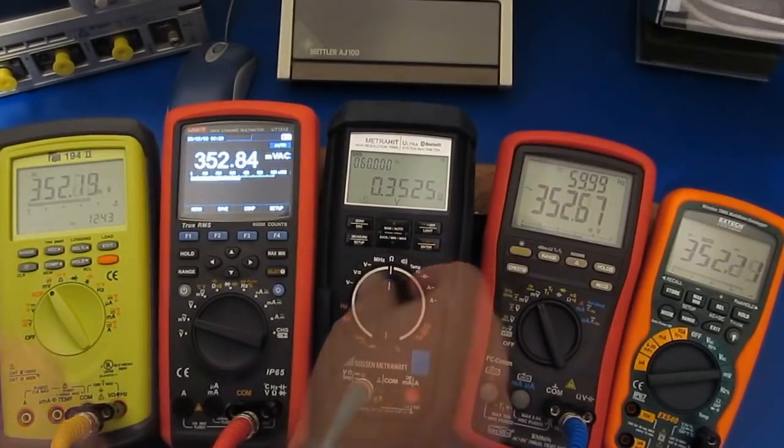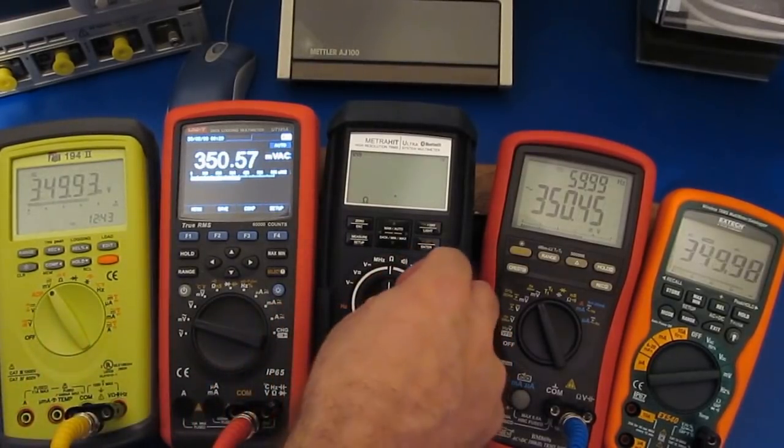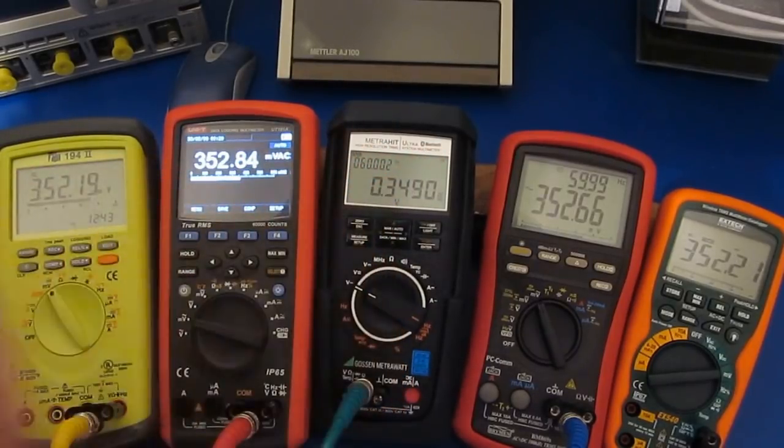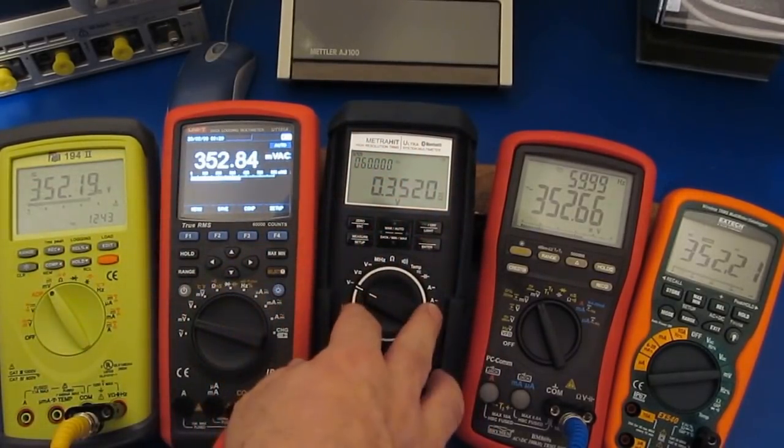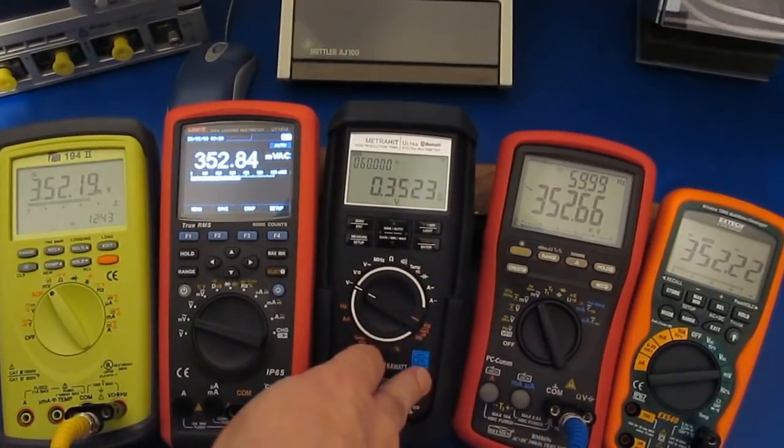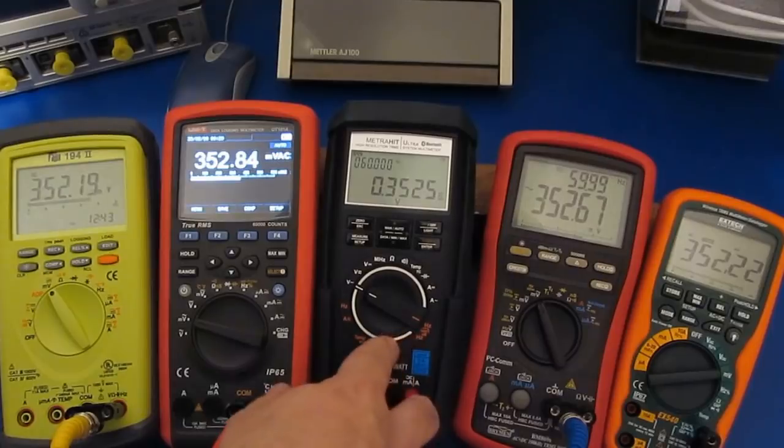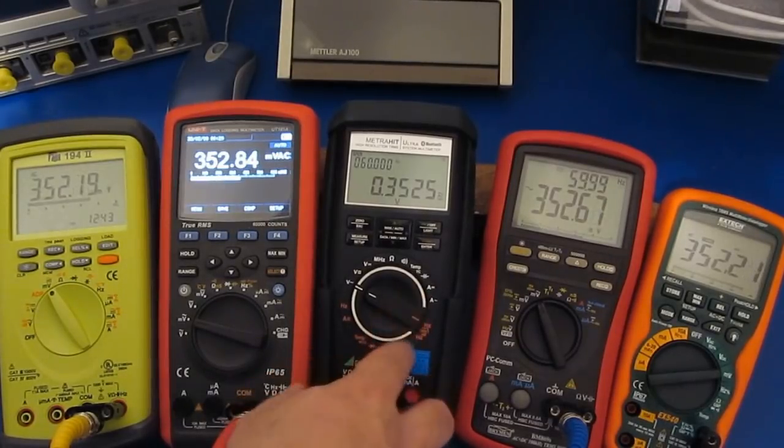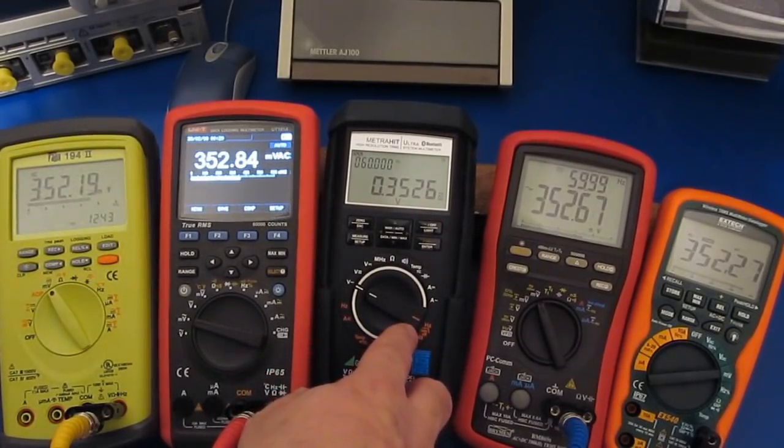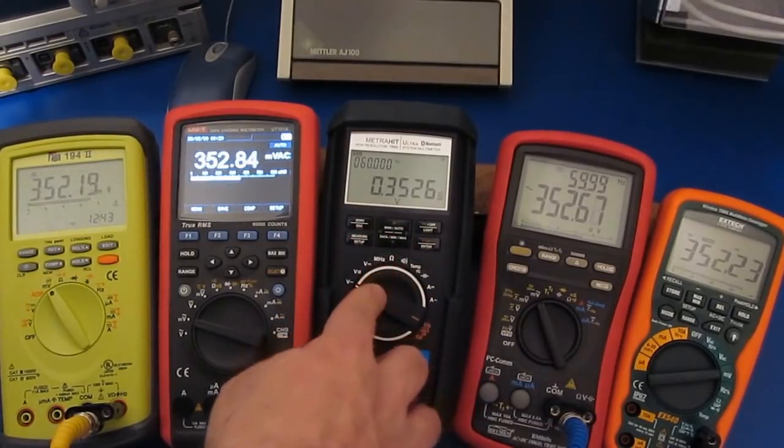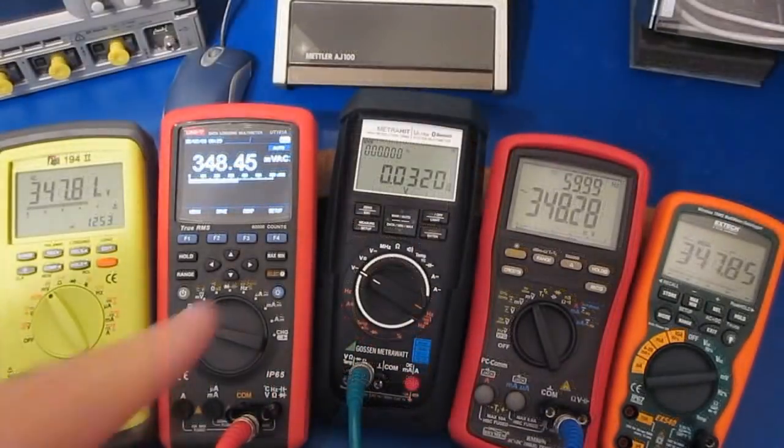All I did was I switched it to ohms, and then I switched it back and the meter started working again. What I think had happened maybe is those may be like a latching relay. And what I'm wondering is when I hit this thing with that tape eraser, if that actually changed the state of the relay, and the meter doesn't have any kind of feedback to know that and that it needs to reset it.